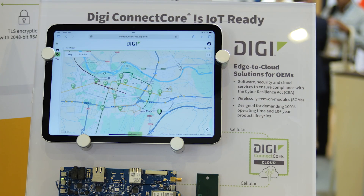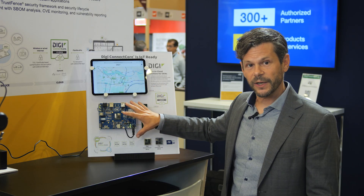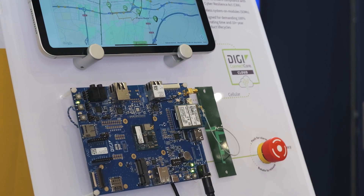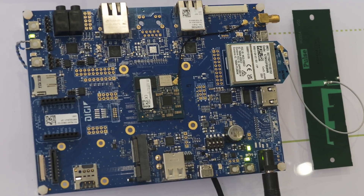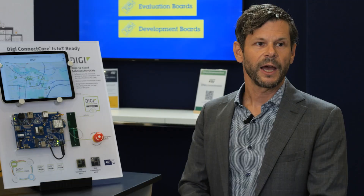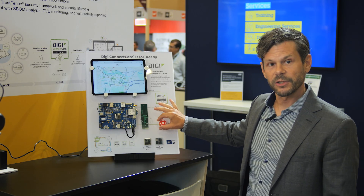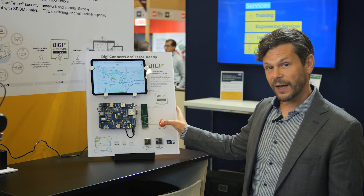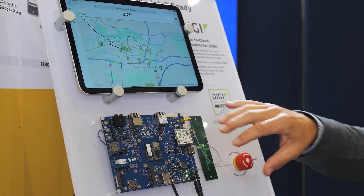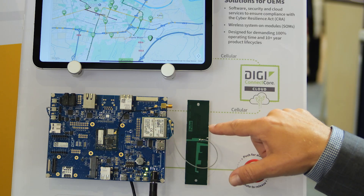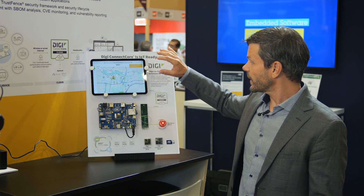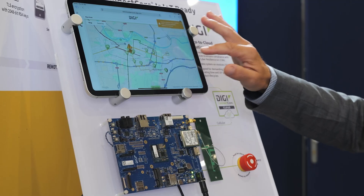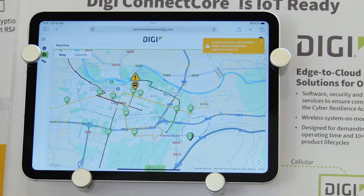Some of the devices on the map here are real physical devices, like the one here based on the DigiConnect Core MP25 system on module, based on the STM32 MP25 microprocessor. We have connected this alarm button here to the device, just as an example. So if you press the alarm, the signal gets processed and sent over the cellular connection to the cloud service, and you see that alarm pop up in real time on the map.